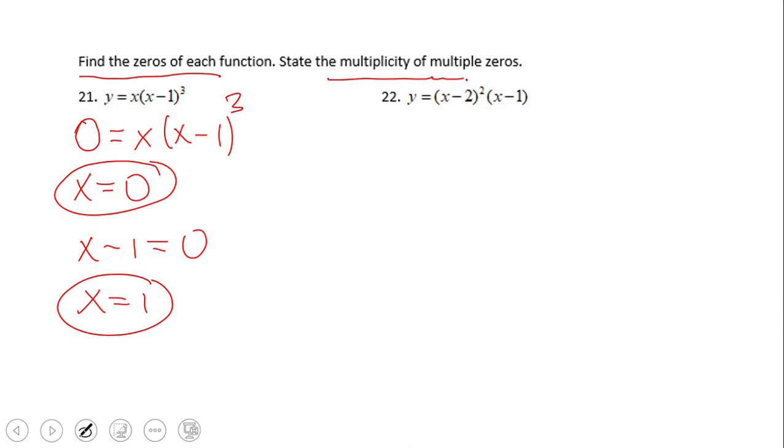Now let's take a look at multiplicity. Looking here, this power of three tells us that x equals one is a zero and the multiplicity of this zero is three. In other words, x equals one is three times the zero of this function.